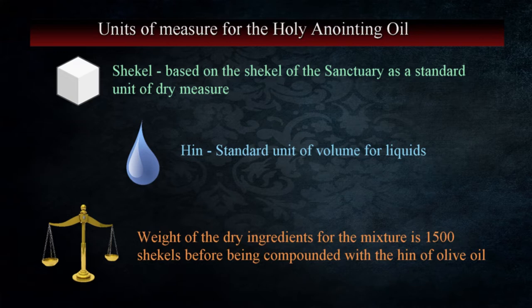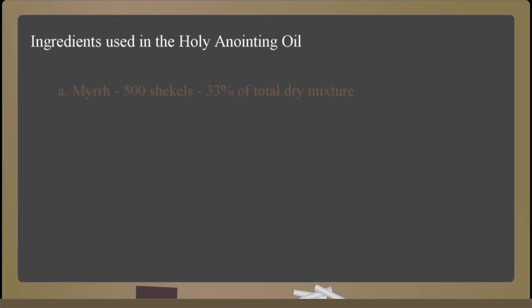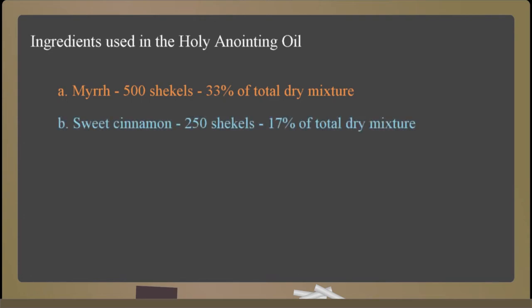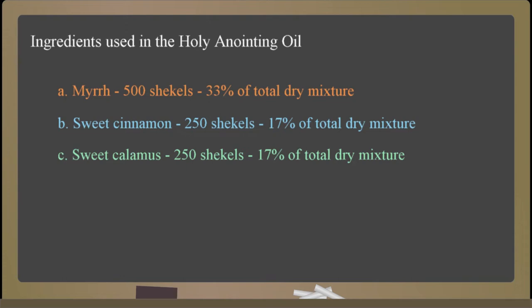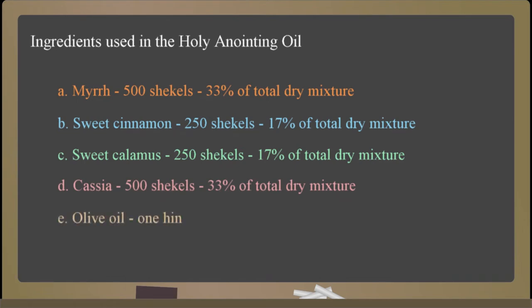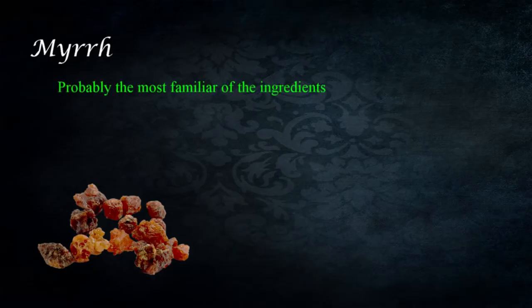I've listed percentages of the dry mix for each of the ingredients in this chart: myrrh 500 shekels — 33% of the total dry mixture; sweet cinnamon 250 shekels — 17% of the total dry mixture; sweet calamus 250 shekels — 17% of the total dry mixture; cassia 500 shekels — 33% of the total dry mixture; and olive oil one hin.